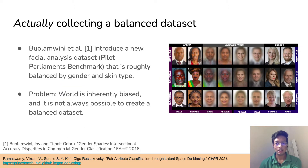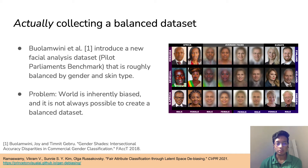One possibility is to collect a dataset that's actually balanced, as was done in the Pilot Parliaments benchmark, where Wilhelmina and Gabriel collected a dataset roughly balanced by both gender and skin type. However, since the real world is inherently biased, this might not always be possible.